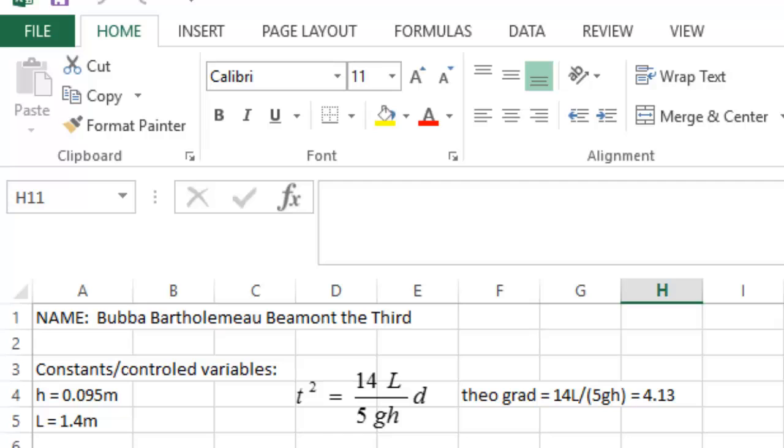So what that means is something like this. In Excel, I've typed in my constants, my controlled variables, H 0.095, L 1.4. Here's that equation again, copied over from the instruction sheet. And I've calculated 14L divided by 5GH and I get 4.13. So I've done this before I even make the graph.